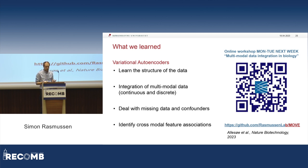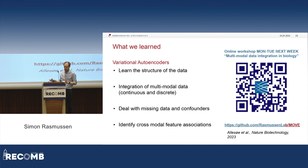To summarize: we can use variational autoencoders to learn the structure of the data, integrate various types of multimodal data, deal with missing data and confounders, and use virtual perturbations to identify cross-modal features.